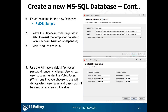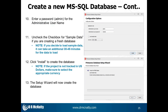We're going to enter the name for our new database — in this example, PMDB_sample. Leave the database code page set at the default, and resist the temptation to select Latin, Chinese, Russian, or Japanese — just leave it as database default. Click Next and we get into creating our SQL Server users. We're going to use the Primavera default of PrivUser under Privileged User, or PubUser under Public User. Whichever you choose will dictate which username and password is used when you create your alias. Enter your password — if you select admin, the password would be admin. You also have an option to load sample data, which takes about 30 to 45 minutes. Normally we uncheck that box. You can also select your currency at this point, then click Install. The Setup Wizard is now ready to create the database.